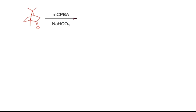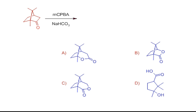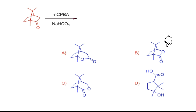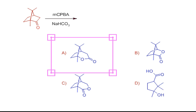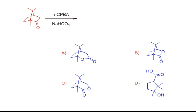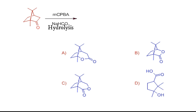Camphore on treatment with MCPBA and NaHCO3 undergoes Baeyer-Villiger oxidation. Since no stereochemistry is depicted in the reactant, we don't have to bother about it. Out of the four options given, option B is cancelled as it shows carbon replaced by oxygen, which doesn't happen in Baeyer-Villiger oxidation. Option C shows migration of less substituted methylene, so it is cancelled. Option A is the correct answer as it shows migration of the tertiary bridgehead carbon. Option D is the hydrolysis product of option A, so if hydrolysis is shown as a second step in the reaction, then option D is to be chosen.